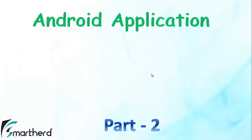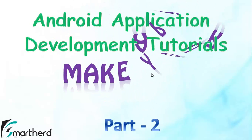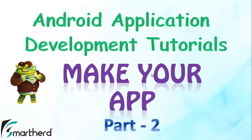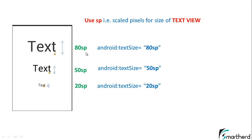Welcome guys to Part 2 of the 'Make Your Own App' tutorial series. In the last video we covered views, view groups, and buttons — for dimensions we use DP and for text sizes we use SP. Now let's jump onto Eclipse and start building our Android interview application.